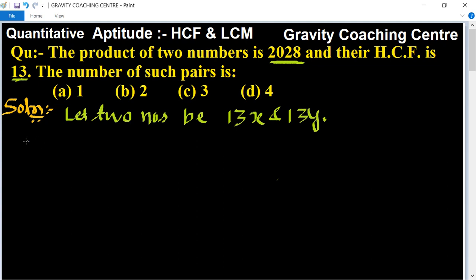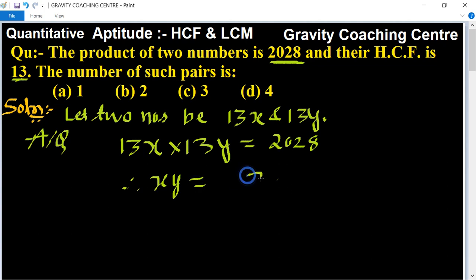According to the question, the product of two numbers is 2028, which means 13x × 13y = 2028. Therefore, xy equals 2028 divided by 13 × 13.